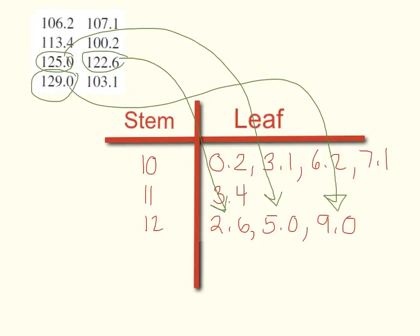So as you can see, all my numbers found a place in the stem and leaf plot. What does it do to show me? It shows me that I had a lot of numbers between 100 and 110, quite a few between 120 and 130, and almost none between 110 and 120.